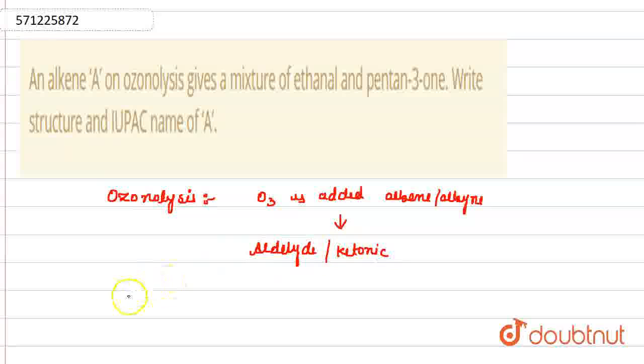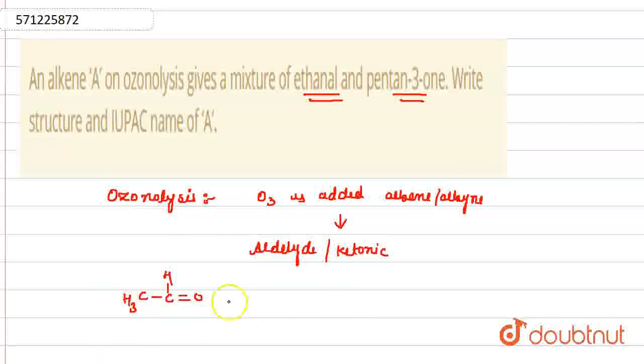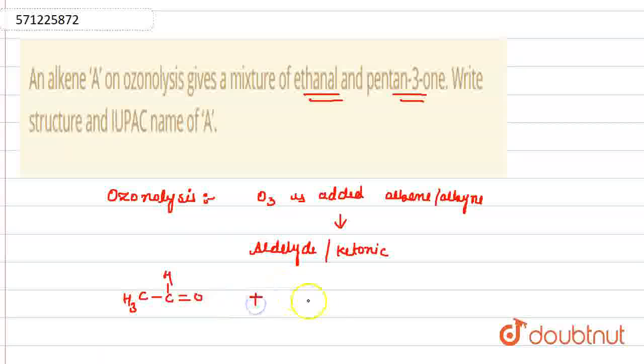Now, we are given the products which are actually formed due to ozonolysis. These are ethanal and pentane-3-one.